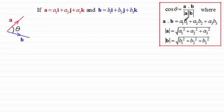Where a dot b was equal to a₁b₁ plus a₂b₂ plus a₃b₃, and the modulus of each of the vectors was equal to the square root of the sum of the squares of their components.